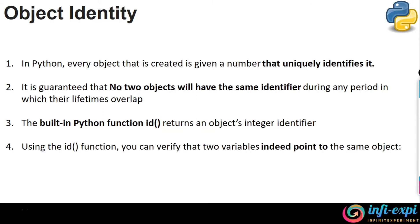With this id() function, you can also ensure that two variables can point to the same object. What I mean by this is: you can have two variables — a single object that can be pointed to by two variables. But that doesn't mean two objects pointing to the same identity. The notable point is two variable names can point to the same object, and that can be tracked with the help of the id() function as well.